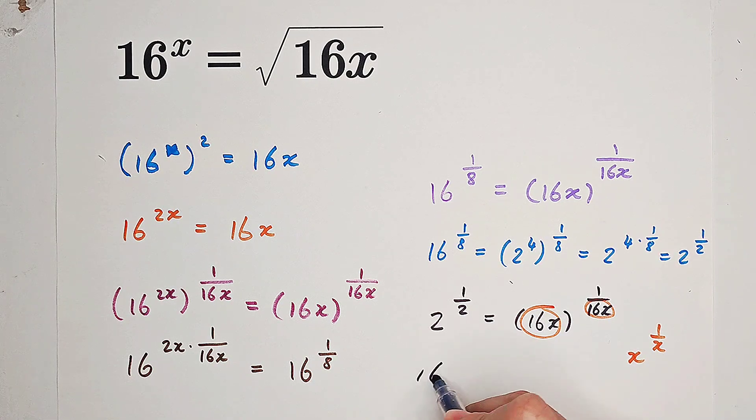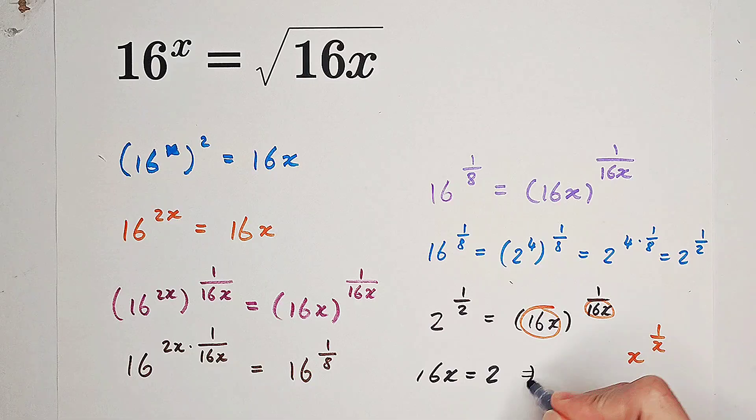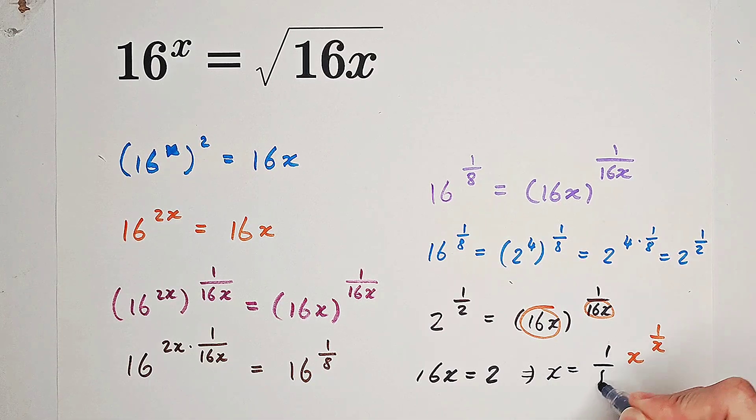So it means that we get 16 times x equals 2, which implies x is 1 over 8.